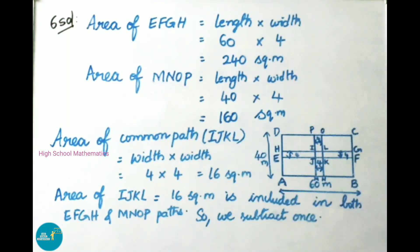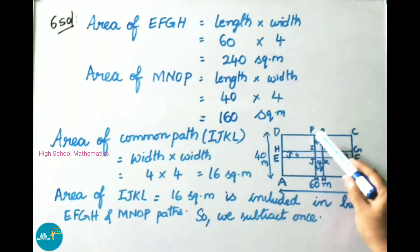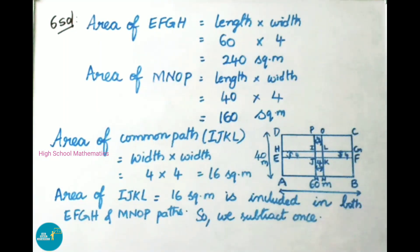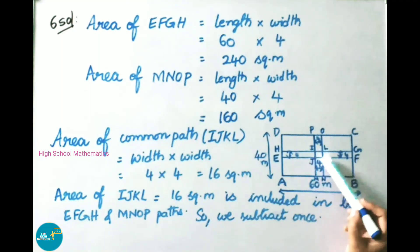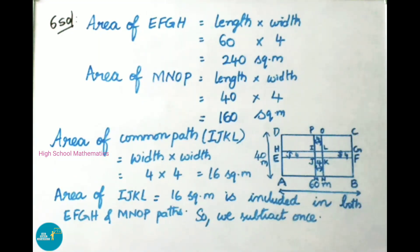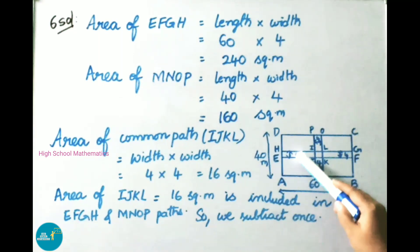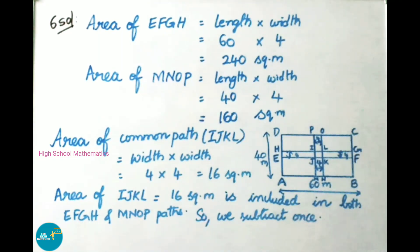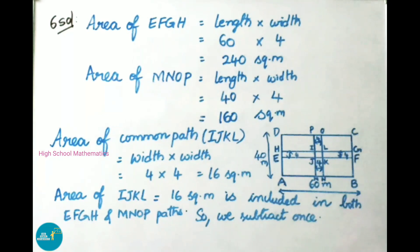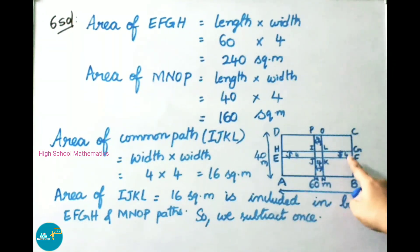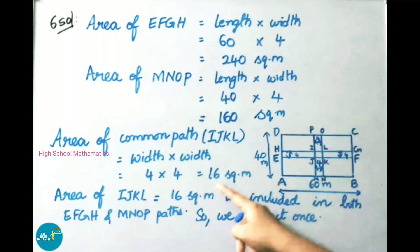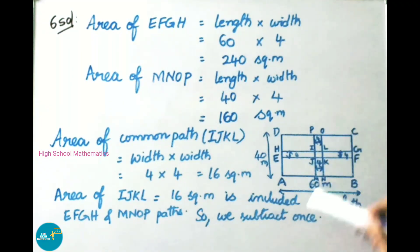Next, area of MNOP: length is 40 meters and width is 4 meters, so 40 into 4 equals 160 square meters. Now we find the area of the common path IJKL, which is width into width, that is 4 into 4 equals 16 square meters. The area of IJKL, 16 square meters, is included in both paths EFGH and MNOP, so we must subtract it once.